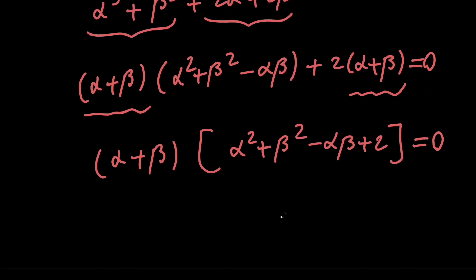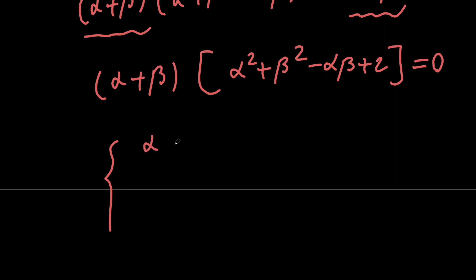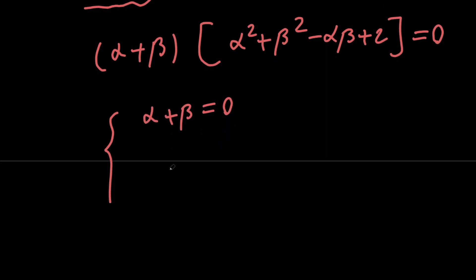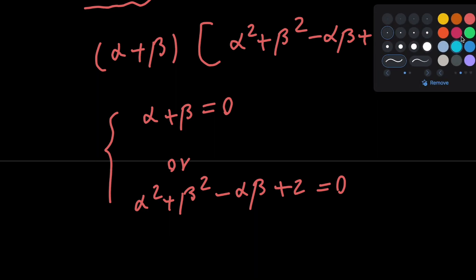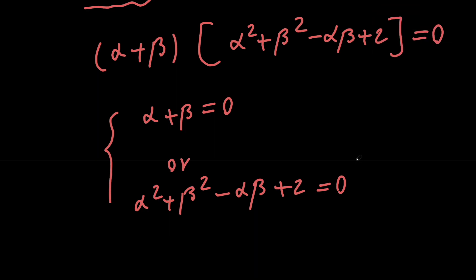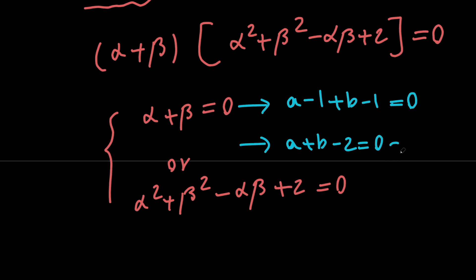So we have a product equal to 0. Based on the zero product property, we have two cases: either alpha plus beta equals 0, or alpha squared plus beta squared minus alpha beta plus 2 equals 0. Remember that alpha is a minus 1 and beta is b minus 1. From the first equation, we get a minus 1 plus b minus 1 equals 0, which means a plus b minus 2 equals 0, which means a plus b equals 2. And that's exactly what we wanted to evaluate.